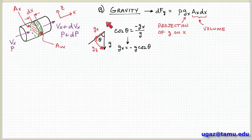And there's a minus because remember we draw our coordinate system with x pointing left to right and z pointing upwards. So this component is in the negative x direction. So if we solve for g_x we get that g_x is equal to minus g cosine θ.